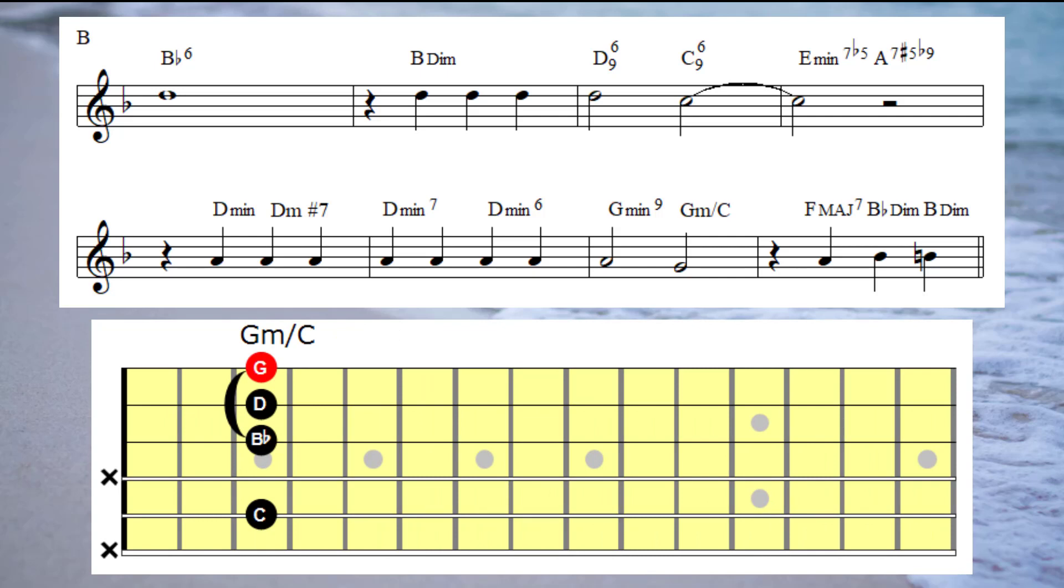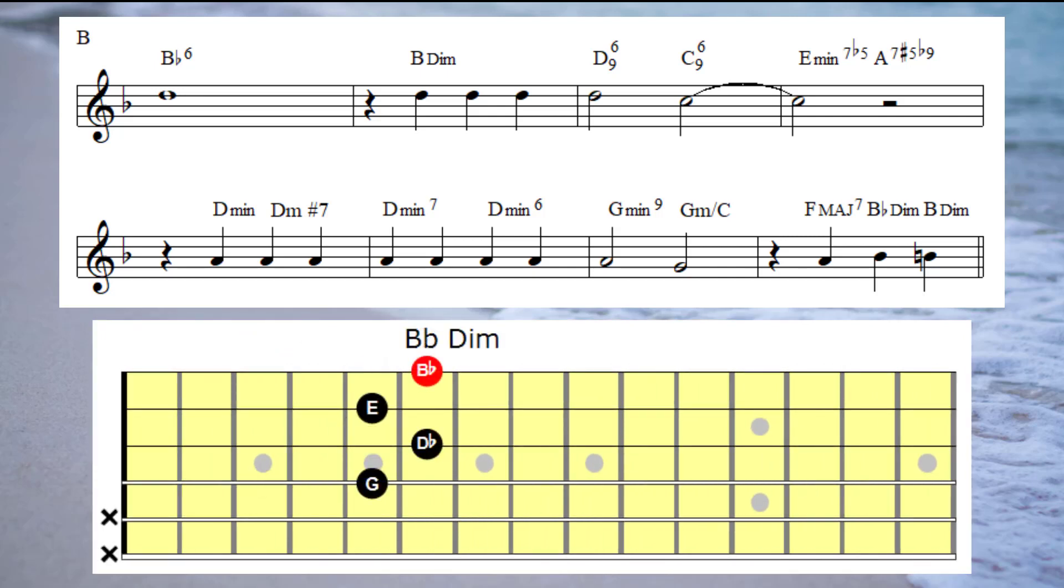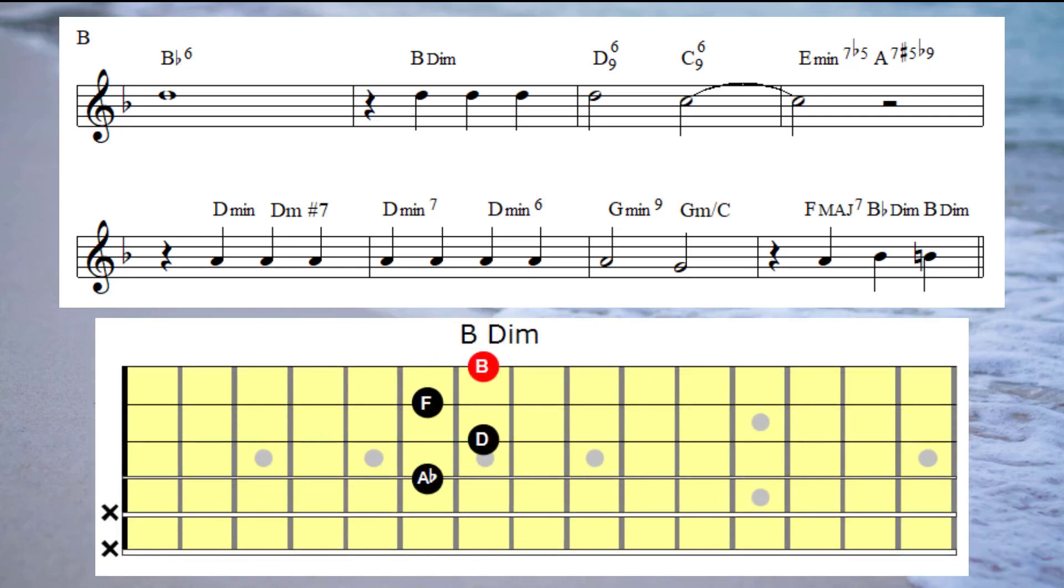And now over to bar eight, I'm going to play F major seventh under the A note, a B flat diminished under the B flat note, and a B diminished under the B note.